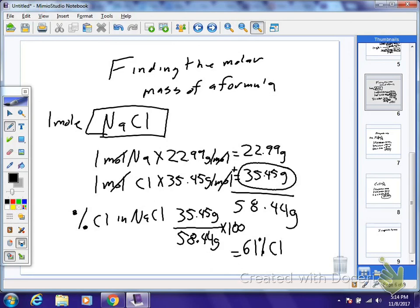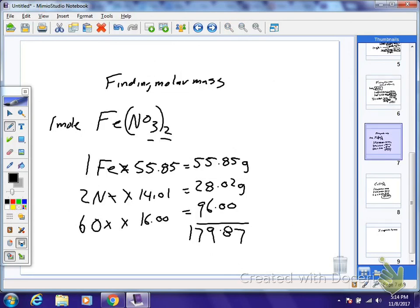And we can do a second example that has already been set up. So if you see, we're doing the same thing. We count how many moles we have, multiply it by each of how many moles we have. We get a total. The total is 179.87.